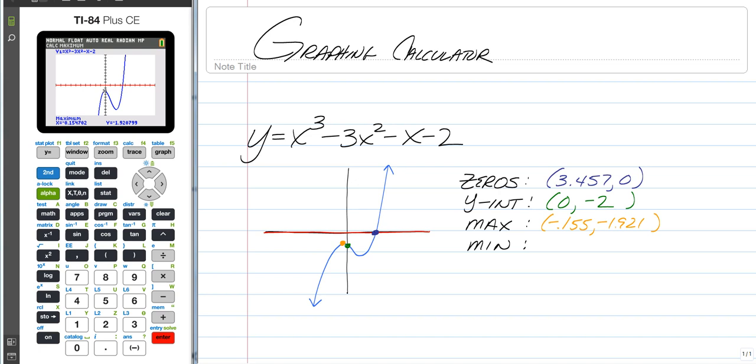Now a minimum follows the exact same procedure. So we're going to be pushing the exact same buttons. The only difference is we're going to find this point down here at the bottom of a curve. So we would just press second trace again which takes us to our calculate menu. And this time we're just going to go to number three minimum instead. But we follow the same procedure.